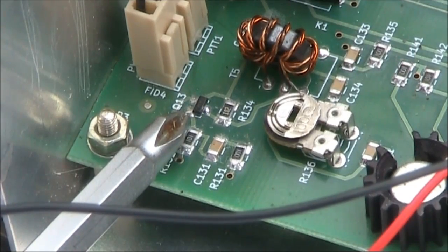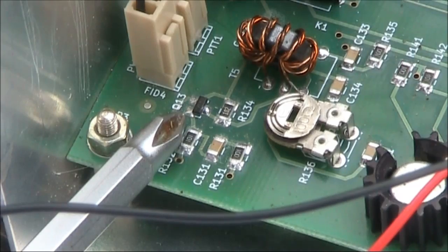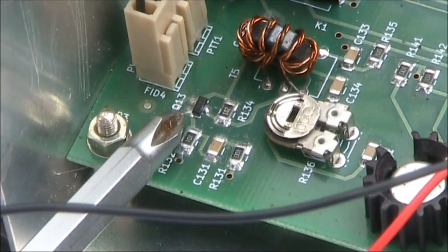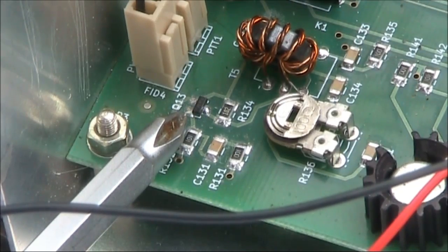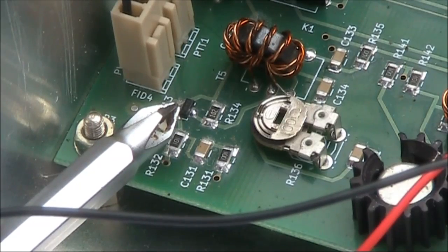The culprit turned out to be Q13, the first RF amplifier stage in the transmitter. It's a tiny surface mount thing, even smaller than resistors and capacitors, but eventually we were able to remove it and replace it with a BC548. The transmitter came to life, giving us its expected output power.